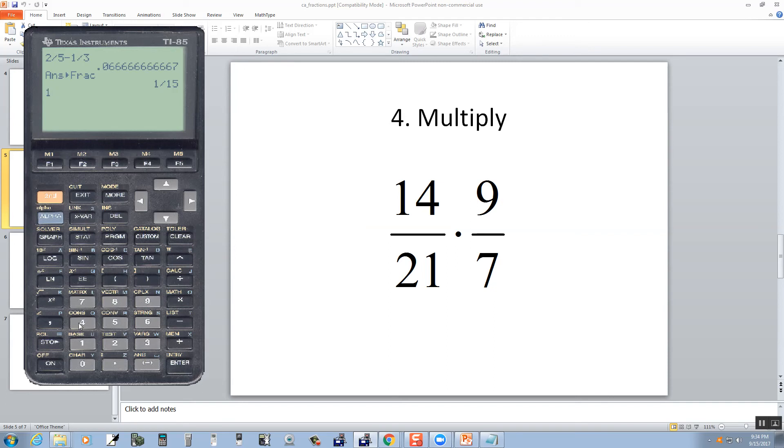Okay, so I'm going to do 14 divided by 21 times 9 divided by 7, and push enter. We get a decimal, so I'm going to change it to a fraction.